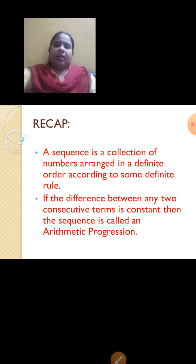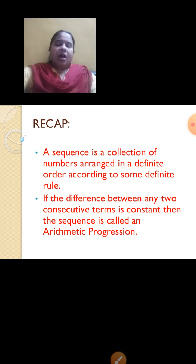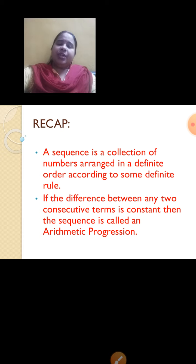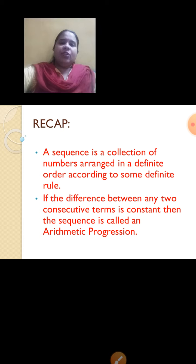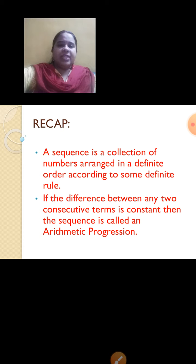Before we do that, let us quickly recap what we have already learned in the previous session. I told you the definition of sequence: a sequence is a collection of numbers arranged in a definite order according to some definite rule. I gave you examples of natural numbers, whole numbers, and perfect square numbers. All those numbers were sequences.